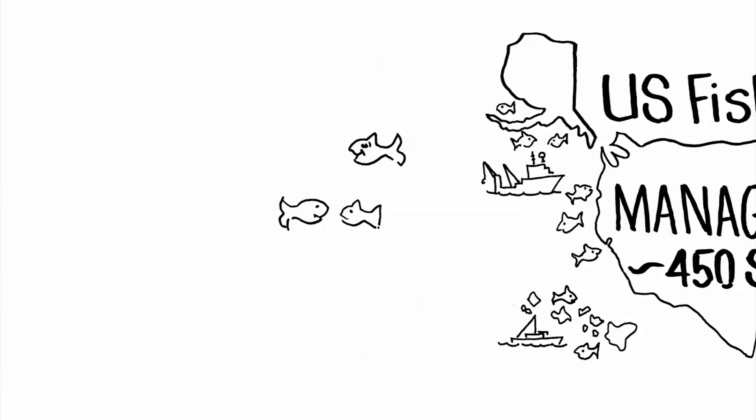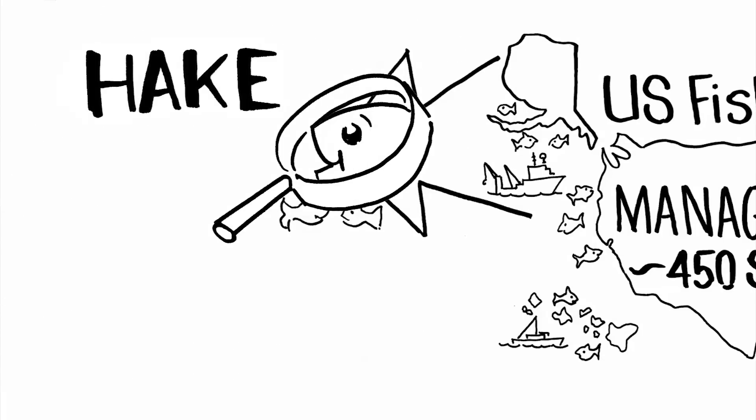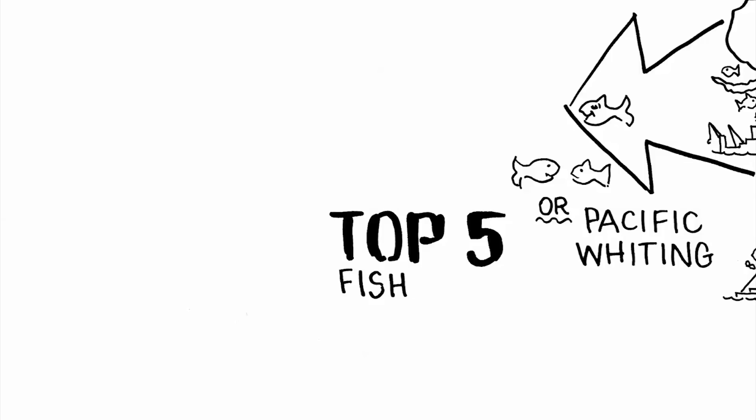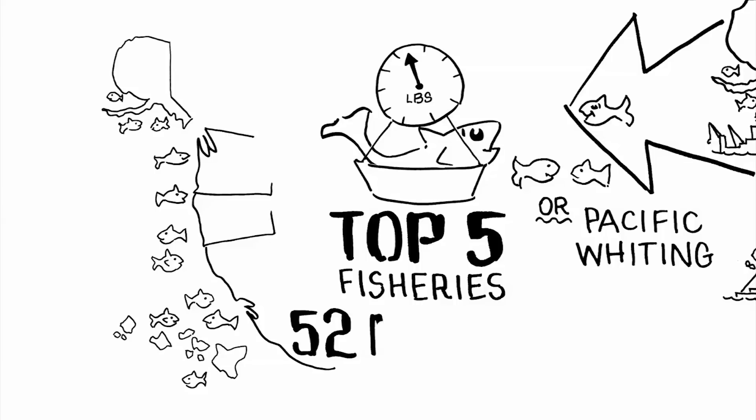Let's take a closer look at the science behind managing one of those stocks, the Pacific Hake Fishery. Also known as Pacific Whiting, it's one of the top five fisheries in the United States by weight, and one that was worth $52 million in 2011.